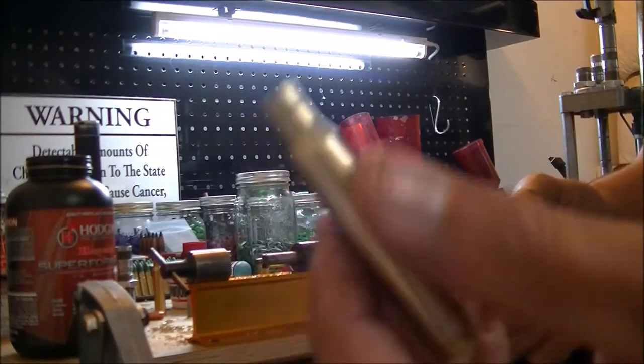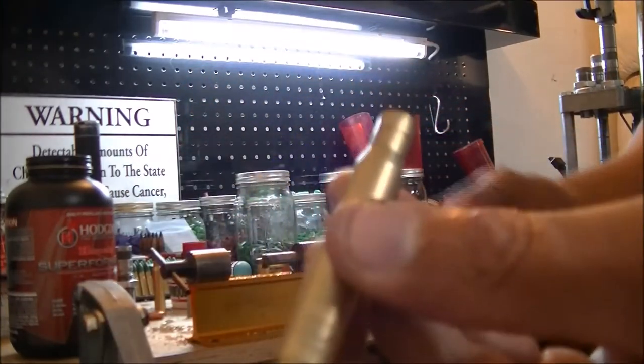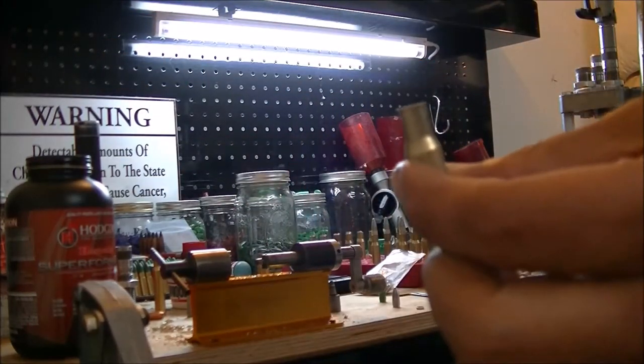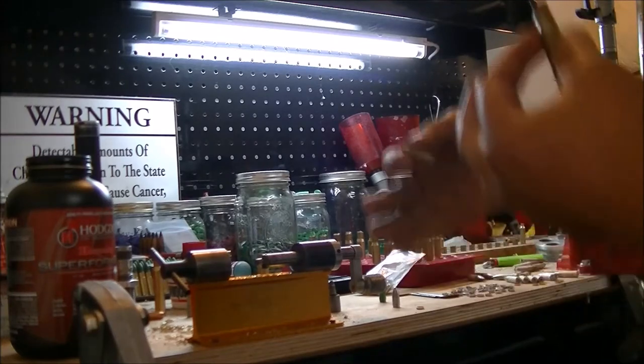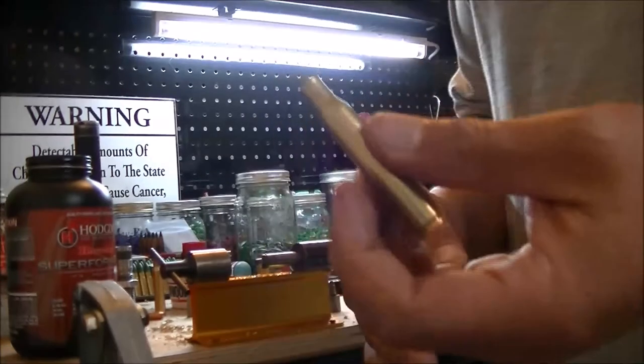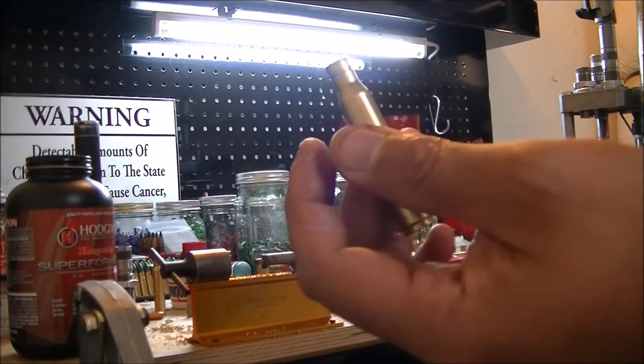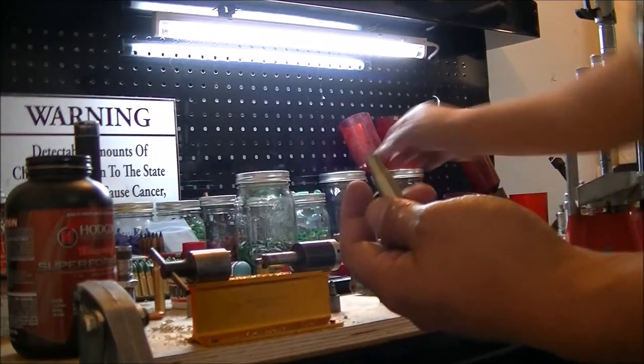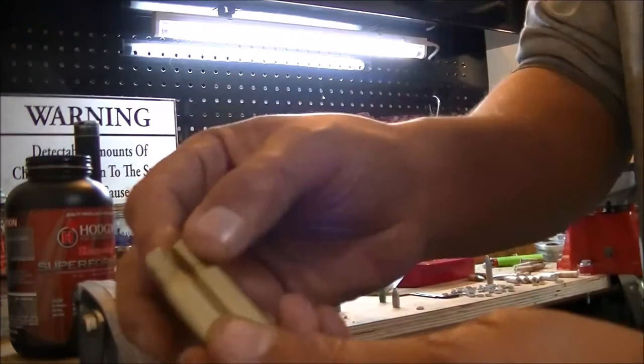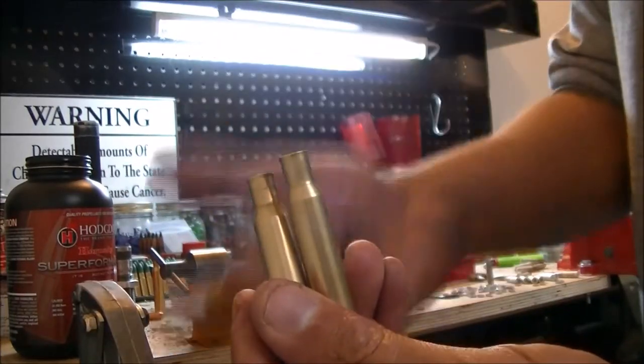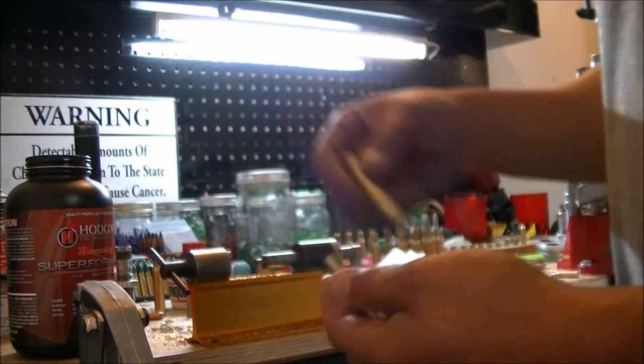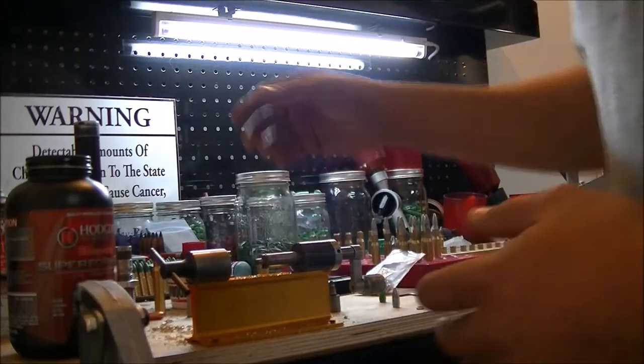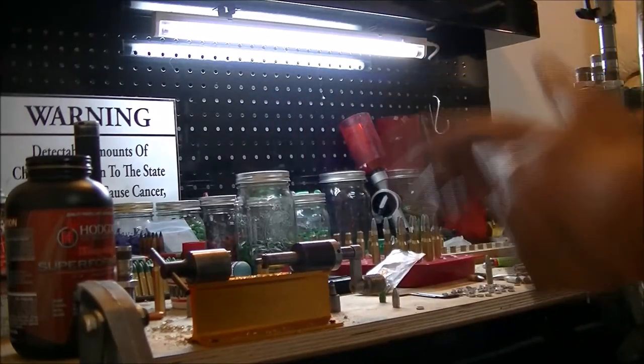I already prepped these cases. I got a nice primer in there and this is what I'm going to be using with my Superformance. I'm doing something a little different which I'll talk about maybe later on when I'm doing some match loads, but these cases that I have separated are actually volume measured and I sorted these cases that way. So each one of these cases are actually the same amount of volume compared to the other cases that I have. My groups I've noticed, and the reason why I'm doing this is because it lowers standard deviation numbers. I'll talk about that maybe later on down the road.